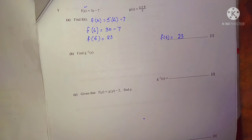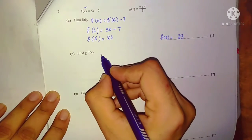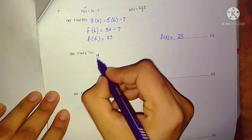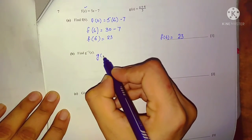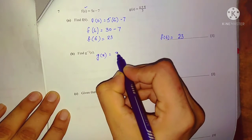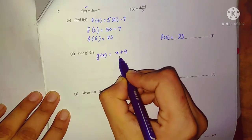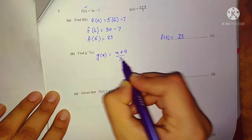Let's come to part b. Part b is to find g inverse of x. The function g of x is x plus 4 over 3.